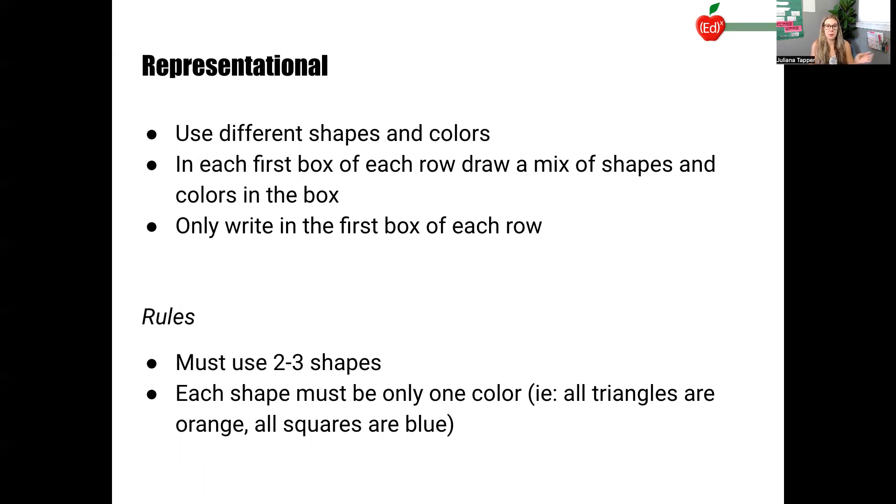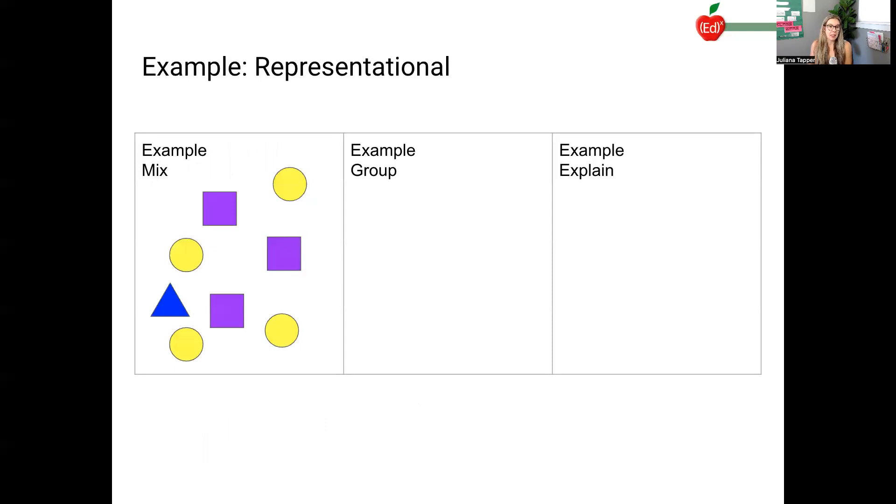But the student, partner A, has to draw in that first column just a hodgepodge of shapes. So it'd be something like this, right? We've got some purple squares, some yellow circles, and a blue triangle, right? So that's our first column. We're going to fill out just the first column.